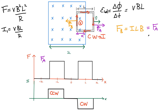Alright, there you have it folks — a square loop moving through a magnetic field. Hopefully this helped you out a little bit and gave you some ideas on how to solve a problem like this. If you like the video, hit the like button down below and consider subscribing to my channel. If you have any questions, just send me an email or leave a comment.